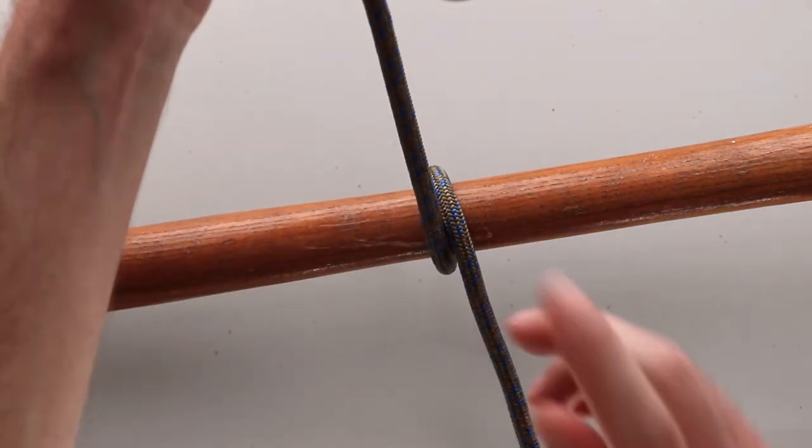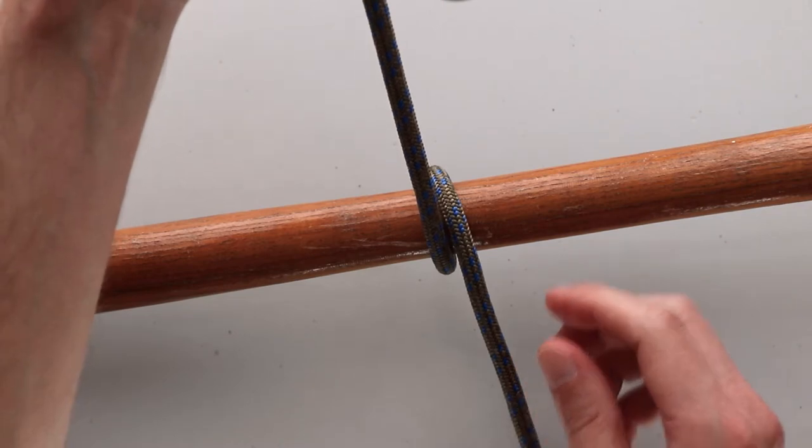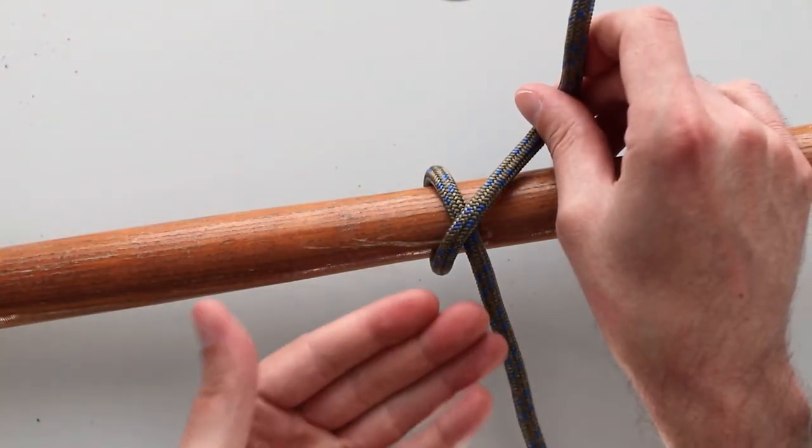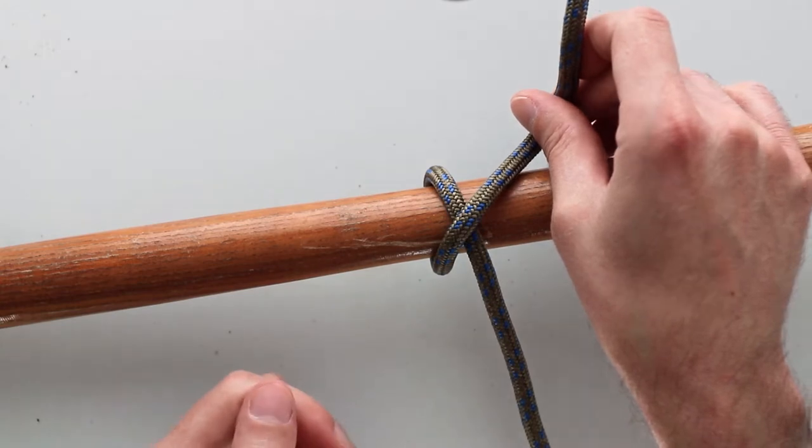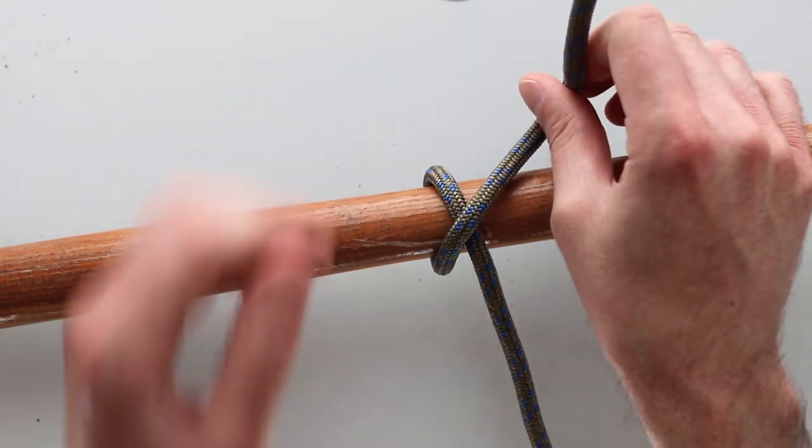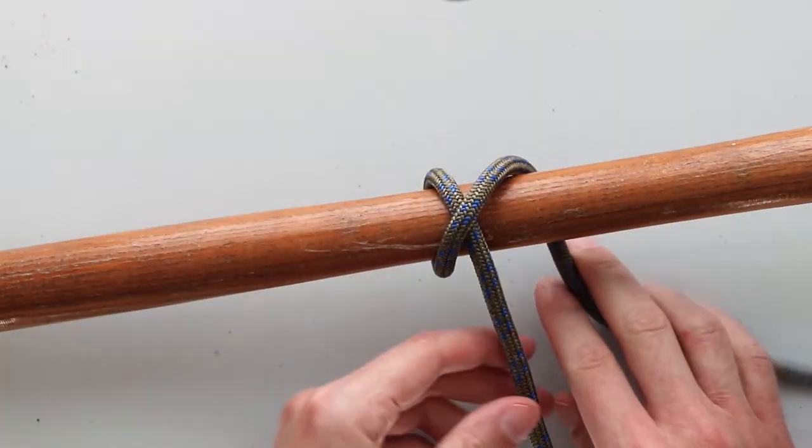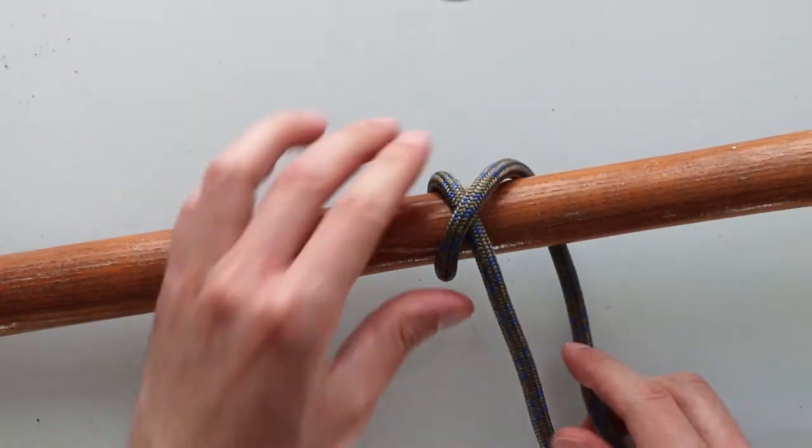We've just made one loop over the top of my pole and then I'm going to cross my rope to make an X like so. The next thing I'm going to do is pass the short end or the working end of my rope underneath the pole like this.